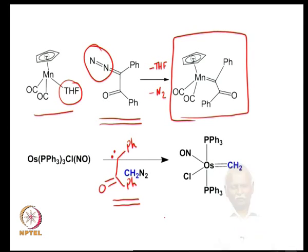It is also possible to use diazomethane as a precursor for CH₂, which is the simplest carbene. Treating an osmium complex with diazomethane leads to diazo elimination — the two nitrogen atoms leave and the CH₂ group is coordinated to the osmium. This molecule is also made using a carbene precursor familiar to most organic chemists.